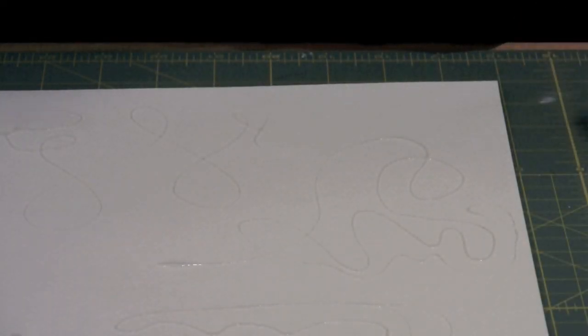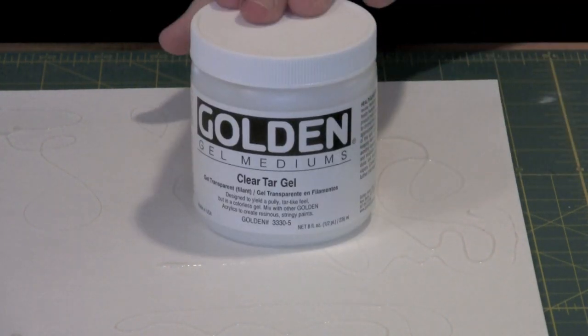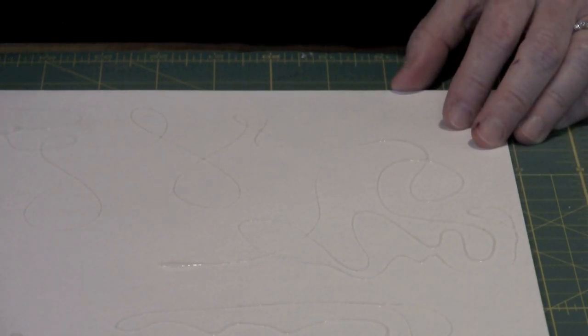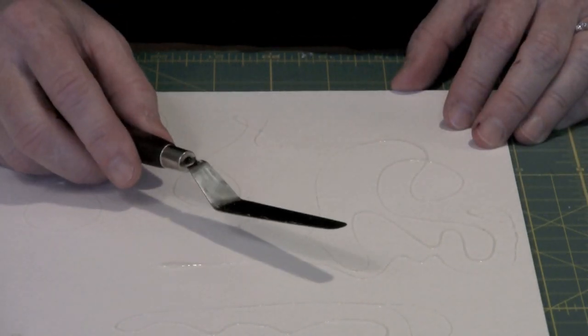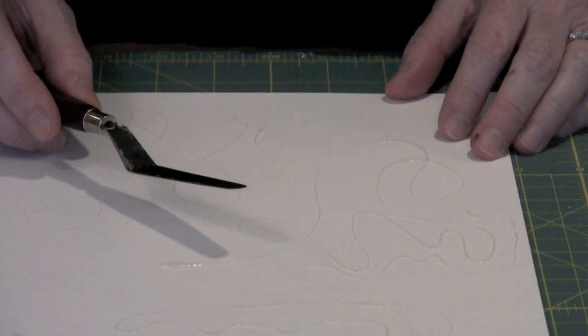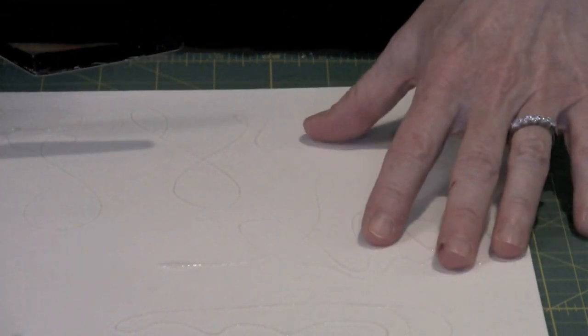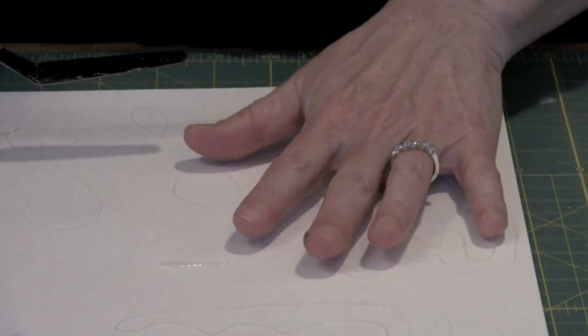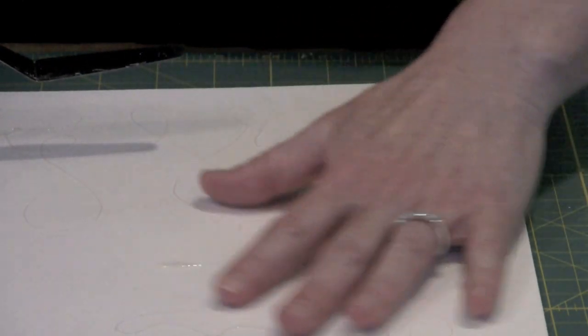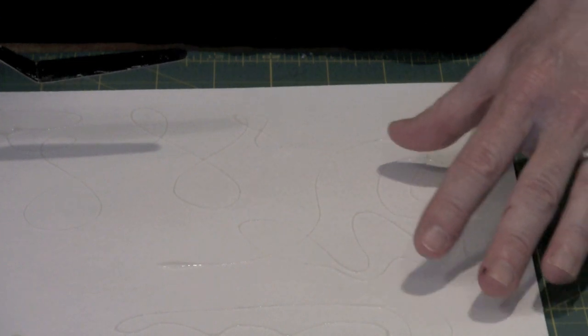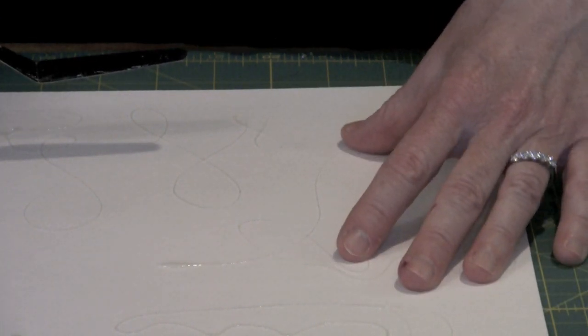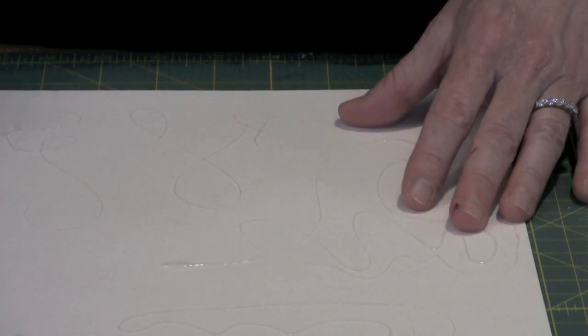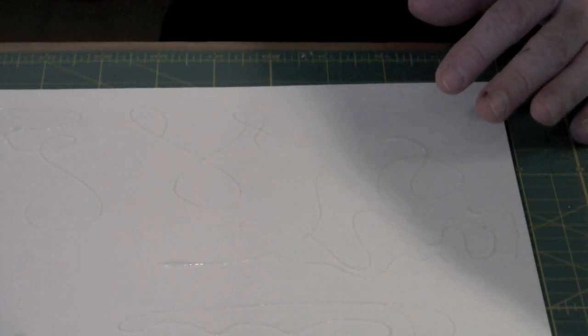This next technique utilizes Golden's clear tar gel. What I did in preparation was I took this piece of 140 lb watercolor paper and I dipped the palette knife into the tar gel and just let it drizzle out. It creates very fine strings and this works as a resist. I have the tar gel on this white piece of paper. I'm going to come in now with some paint and wash it over the tar gel. You'll see that we're not going to get paint wherever that tar gel is.